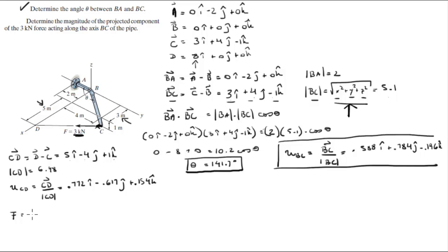We have the magnitude which is 3 kilonewtons times the unit vector CD gives you the Cartesian vector form. So you're basically multiplying this 3k by each of these three values, and you get that the Cartesian vector form is 2.316i minus 1.851j plus 0.462k.